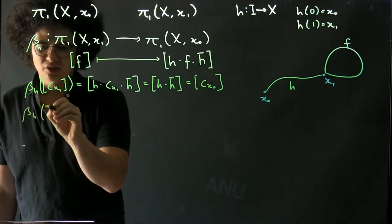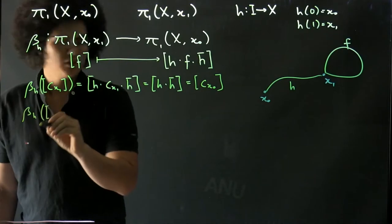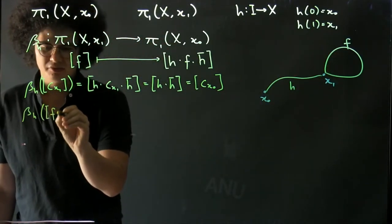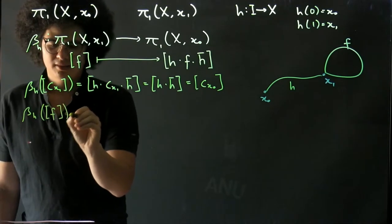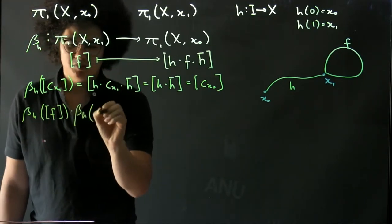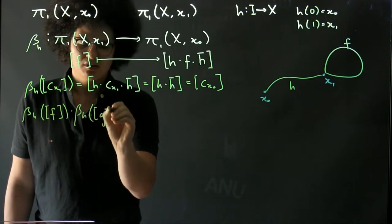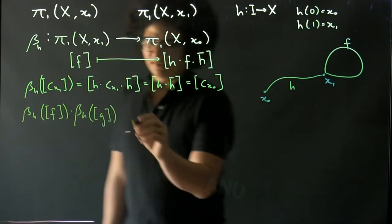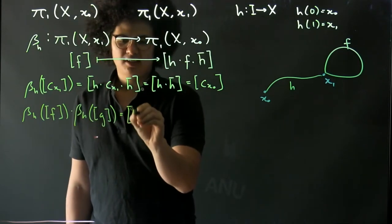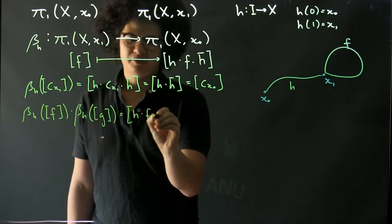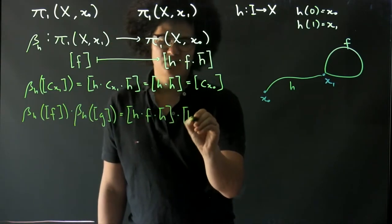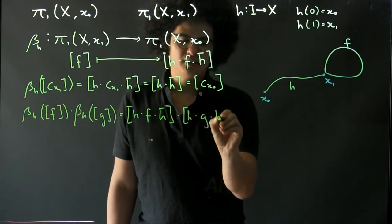Then we need to see that β_h of... we'll take two loops in here, so we'll take f, and then we'll multiply that with β_h applied to some loop g or some homotopy class of loops g.